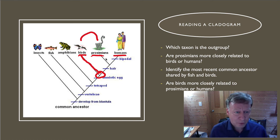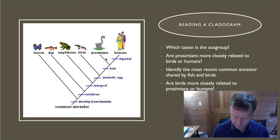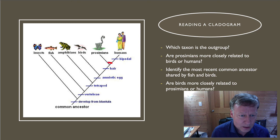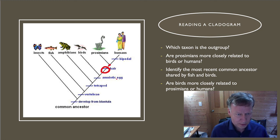One final point: if you were asked to show when the most recent common ancestor of prosimians and humans existed — if asked to circle it, for example — your circle must include the node. If you put your circle in the wrong place, you'd be indicating a point further back in time than the actual most recent common ancestor. So always make sure to include the node if you're ever asked that.